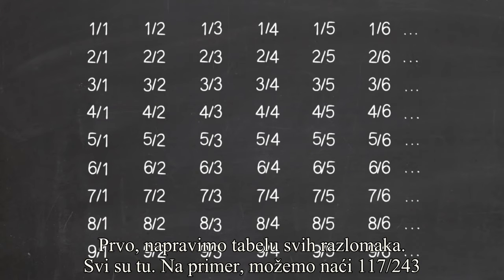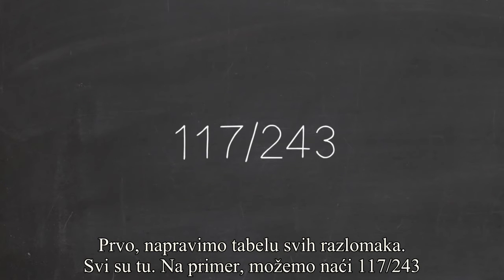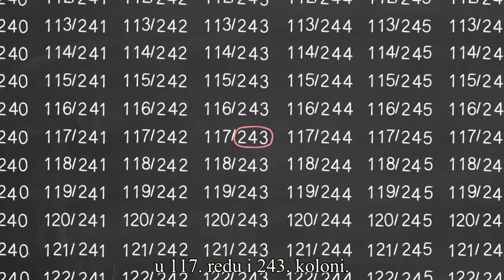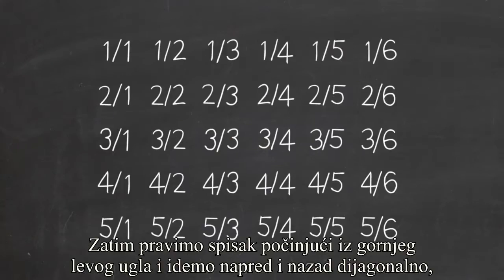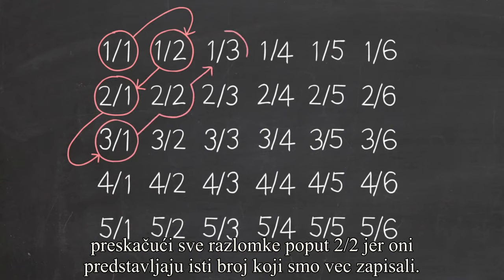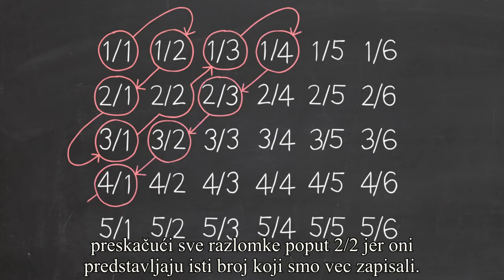First, we put all the fractions into a grid. They're all there. For instance, you can find, say, 117 over 243 in the 117th row and 243rd column. Now we make a list out of this by starting at the upper left and sweeping back and forth diagonally, skipping over any fraction, like 2 over 2, that represents the same number as one we've already picked.